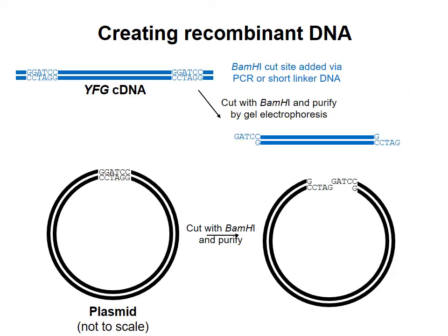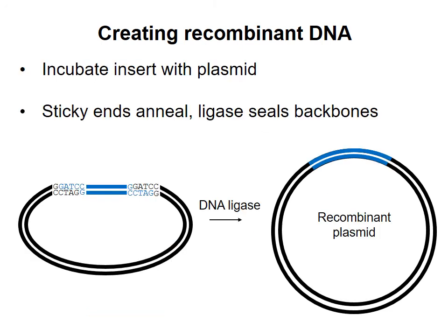For example, suppose you wanted to use the BamHI cut site on a plasmid to insert the cDNA for your favorite gene. You could add a BamHI cut site onto the ends of the cDNA by ligating on short pieces of DNA that contain that sequence, called linker DNA. Or you could design your PCR primers to contain a BamHI recognition site, as discussed in the section on site-directed mutagenesis in the last video. You cut the cDNA and your plasmid with BamHI, giving rise to sticky ends that are compatible with each other. You purify these DNA fragments away from the restriction enzyme using gel electrophoresis. Then you mix the fragments together and add DNA ligase. The sticky ends can anneal to each other, allowing DNA ligase to seal the backbones. This gives rise to the desired recombinant plasmid.